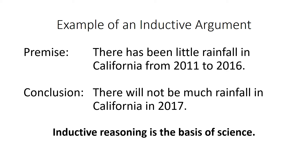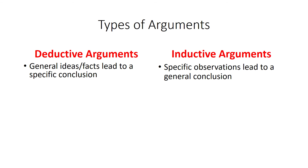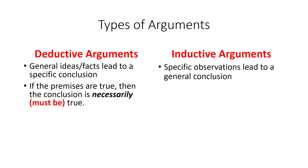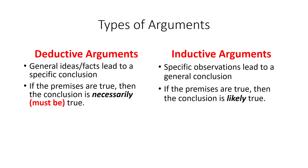This highlights the key difference between deductive and inductive arguments. If the premises in a deductive argument are true, then the conclusion is necessarily true — it must be true. But in an inductive argument, if the premises are true, then the conclusion is only likely true, because if we get more facts and observations, it can change our conclusions — or it can confirm what we already saw. New facts not previously taken into account can change our conclusions.